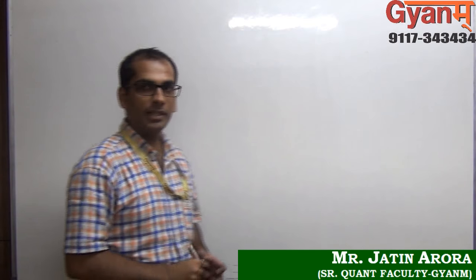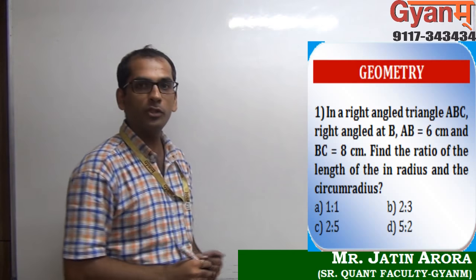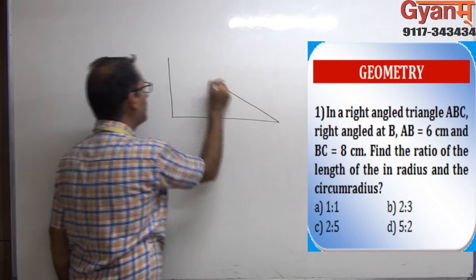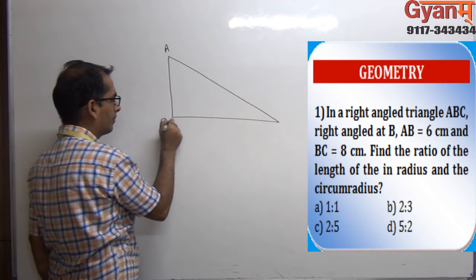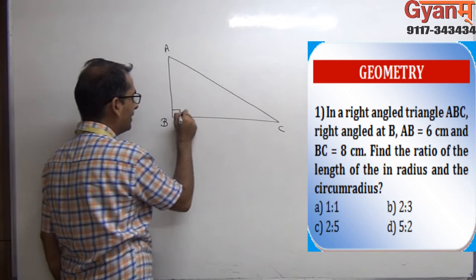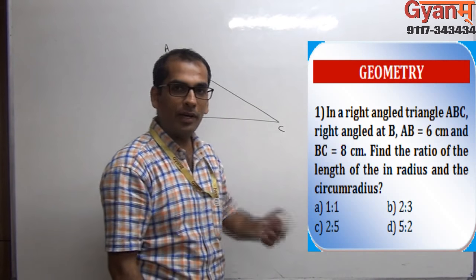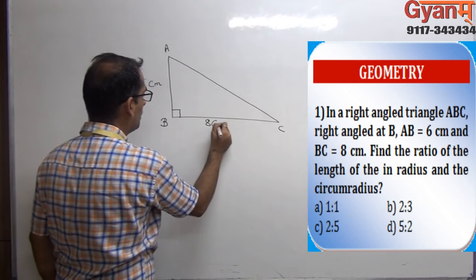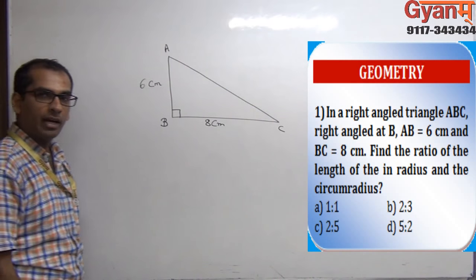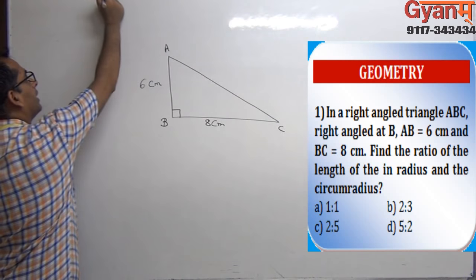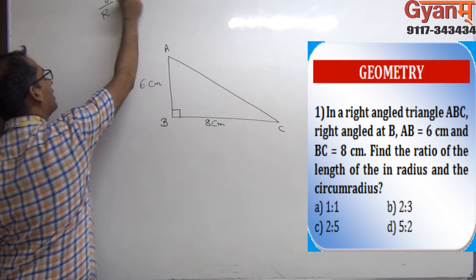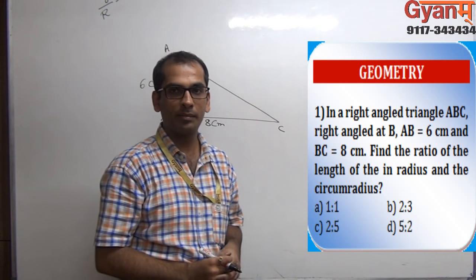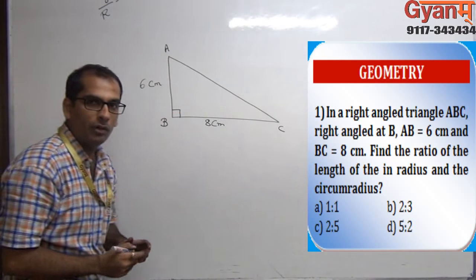Hello friends. In this video we will discuss a problem based on geometry where we are given that ABC is a right angle triangle with angle B equal to 90 degrees. We are also given that AB is equal to 6 centimeters and BC is equal to 8 centimeters, and we are asked to find the ratio of the inradius and the circumradius, that is small r and capital R.